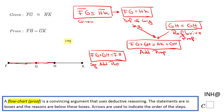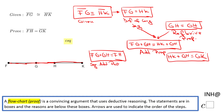Very similarly, I'm going to have another box: HK plus GH — that would be GK. The reason is the same as the previous reason: segment addition postulate.